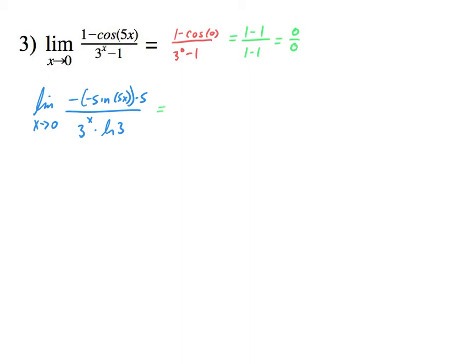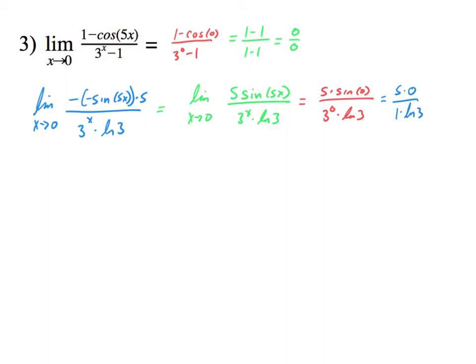Let's clean that up. I now have the limit as x approaches 0 of 5 sine of 5x over 3 to the x times ln3. Now we plug in 0. That's going to be 5 times sine 0 over 3 to the 0 times ln3. Sine 0 is 0, and 3 to the 0 is 1, so I now have 5 times 0 over 1 times ln3, which is 0 over ln3. And 0 over ln3 is 0. So my answer is 0 — that would be my limit value answer.